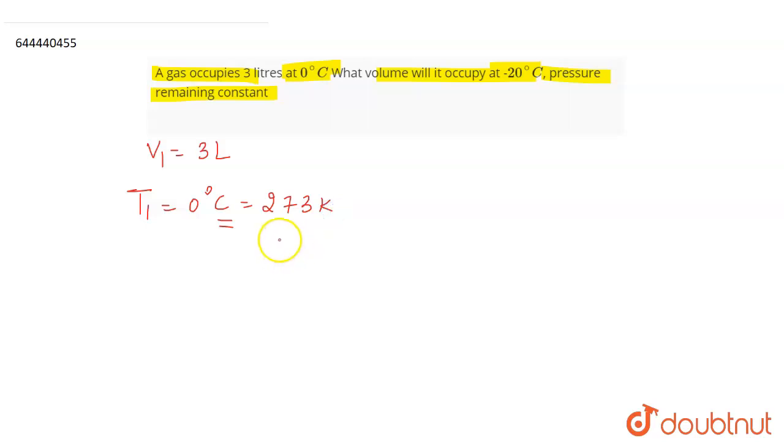So you will convert zero degrees Celsius to Kelvin, which is equal to 273 Kelvin. Now you have to calculate the volume that it will occupy at minus 20 degrees Celsius. It means that the T2 given to you is minus 20 degrees Celsius, which is equal to 273 minus 20. Generally we add 273 to the Celsius temperatures to convert it into Kelvin. So as it is a negative, that is why we get minus 20 here.